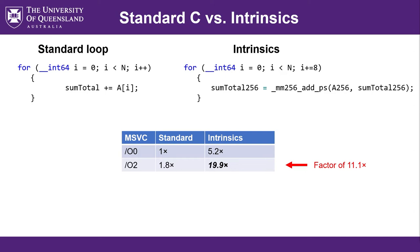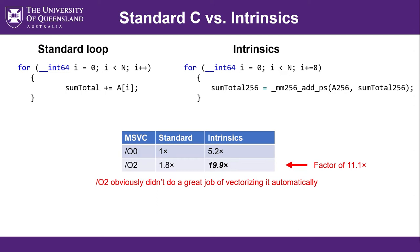We've gotten an 11x speed up for not really doing that much. The fact that we got 11x with O2 optimizations suggests the O2 optimizations didn't do a very good job of automatically vectorizing this code. Now, I've glossed over some minor details — at the end of my intrinsic loop, I'll have one 256-bit vector of 8 float32s, not the final sum. I actually still have to add up those 8 elements within the vector to get the final result, but that's a minor operation for a long array. Similarly, if N is not a multiple of 8, you'll have a small loop at the end to deal with the remainder elements, but if the array is much larger than 8, those calculations are negligible.